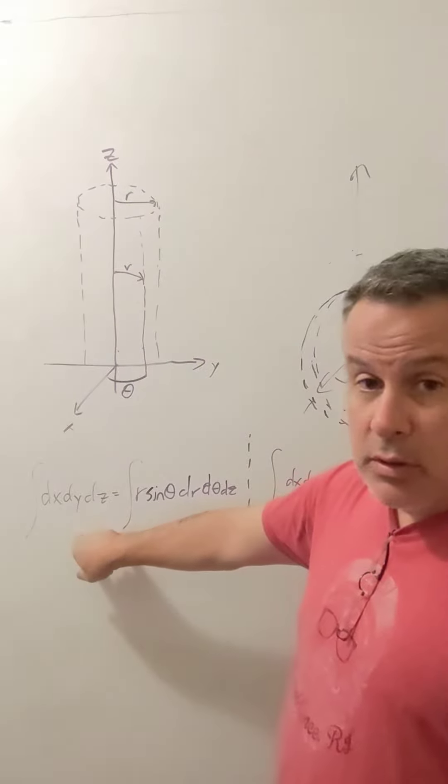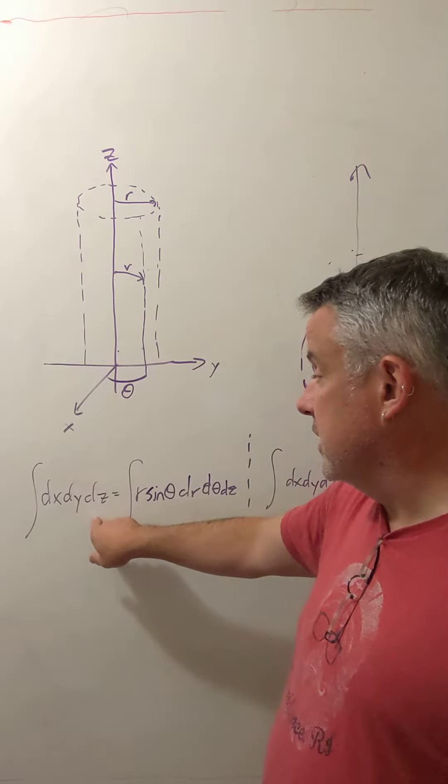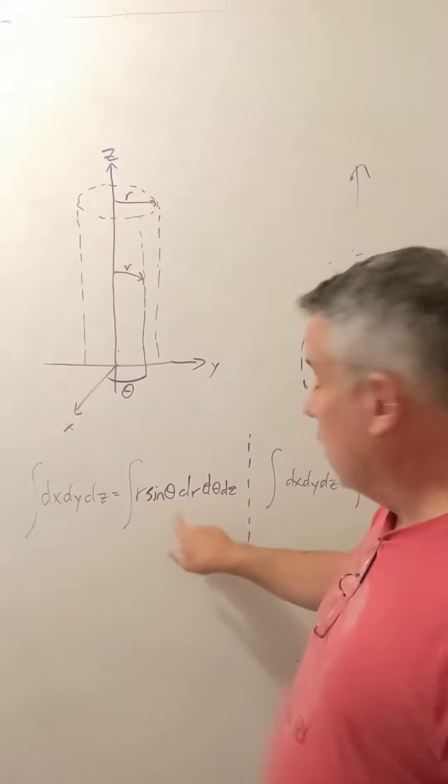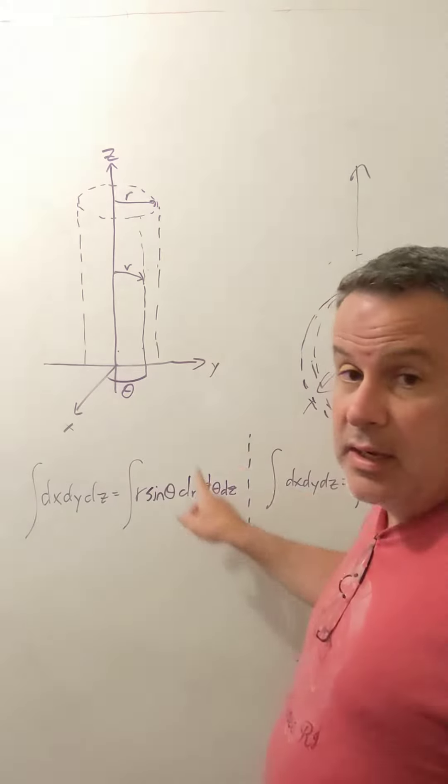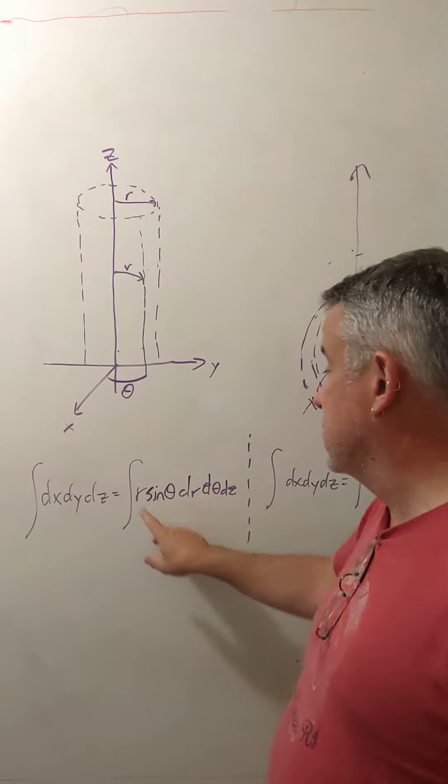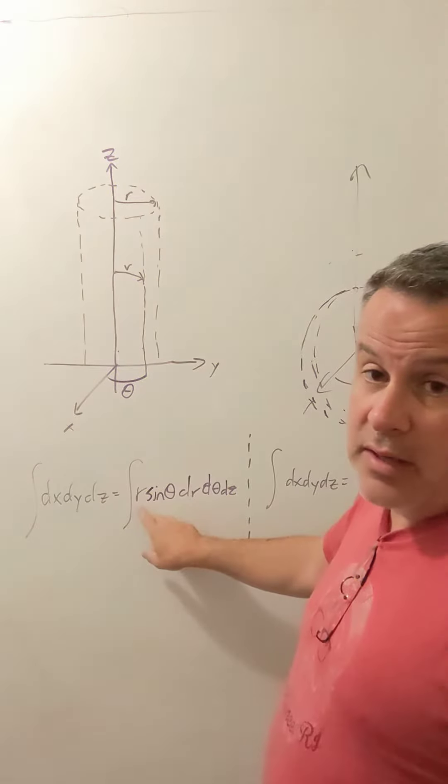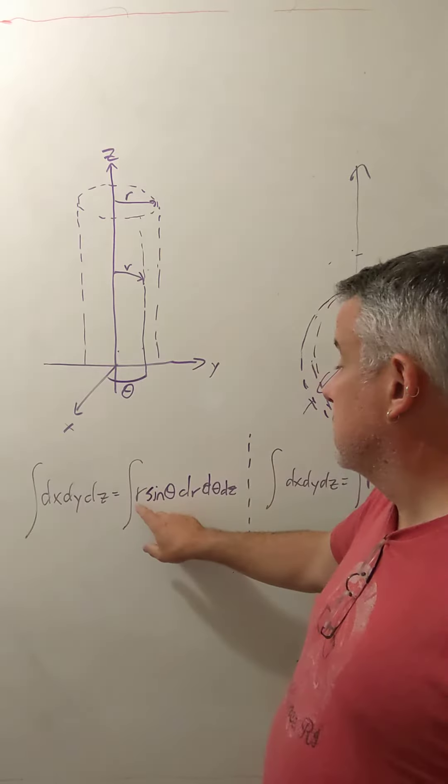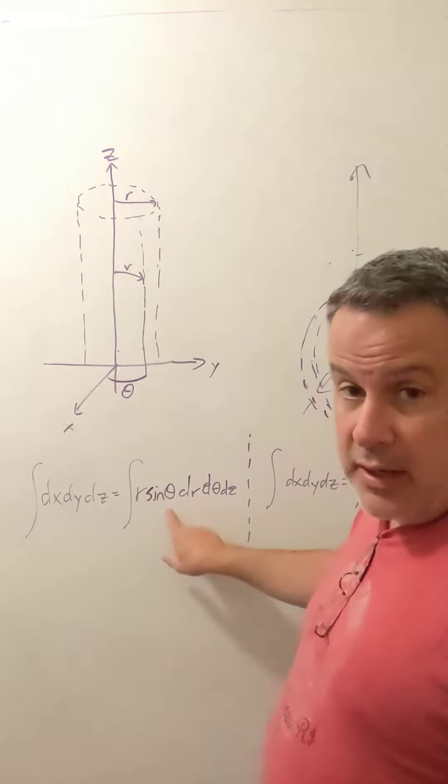If you'd like to write an integral in x, y, z, and rewrite it in terms of r, theta, and z for the cylindrical coordinates, you need a Jacobian factor. The determinant of the Jacobian matrix is r sine theta in this case.